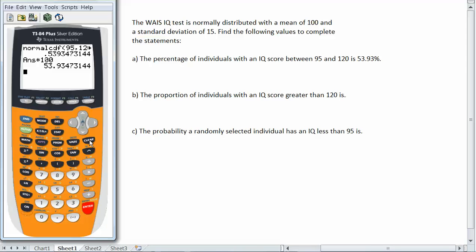Okay, well let's go back and now do Part B. In Part B we want the proportion of individuals with an IQ score greater than 120. In this case, since it's a proportion, we won't bother to change it to a percent. We'll just leave it in its decimal form.